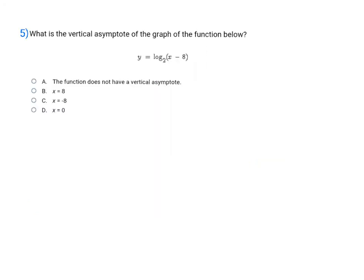This question asks: what is the vertical asymptote of this graph? Remember, to find the vertical asymptote, it's just x equals the opposite of what's in the parentheses. I have a minus eight in the parentheses here, so it's going to be x equals positive eight. That makes my final answer B.